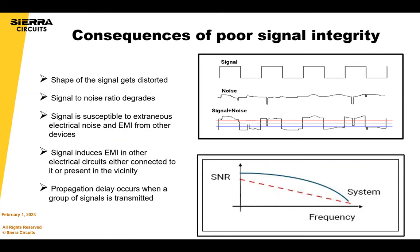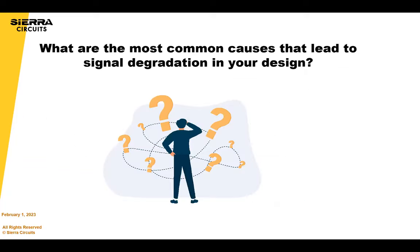When there are signal integrity issues, you'll see the shape of the signal gets distorted, the signal-to-noise ratio degrades, the signal becomes susceptible to extraneous electrical noise and EMI from other devices, the signal induces EMI to other electrical circuits either connected to or nearby, and propagation delay occurs while transmitting a group of signals. So ask yourself: what are the most common causes that lead to these signal integrity issues?